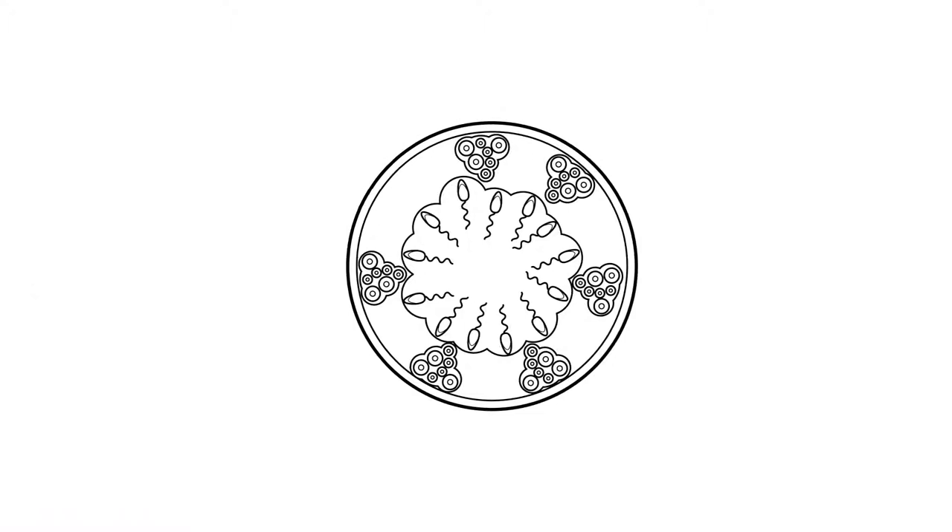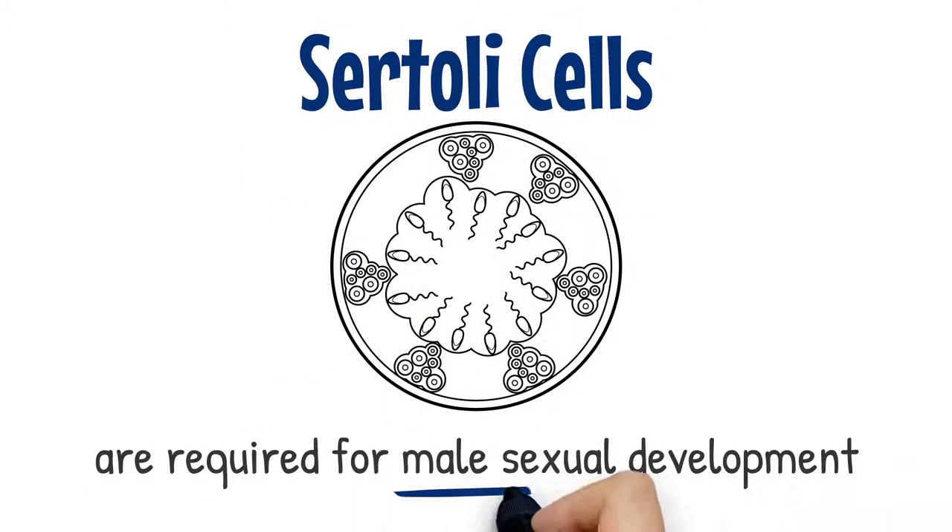Sertoli cells are also required for male sexual development and in puberty, once spermatogenesis has begun, Sertoli cells are unable to proliferate. This means from that point on no more Sertoli cells are created, and any damage to existing Sertoli cell populations can be permanent.